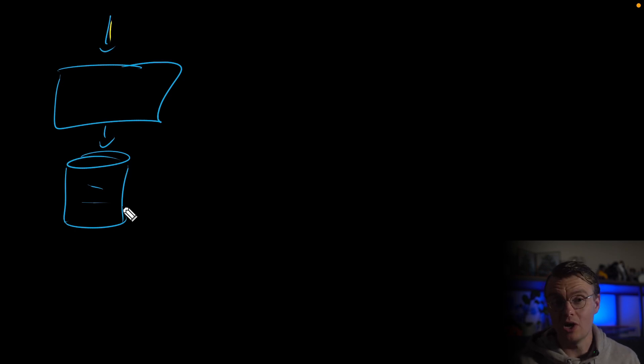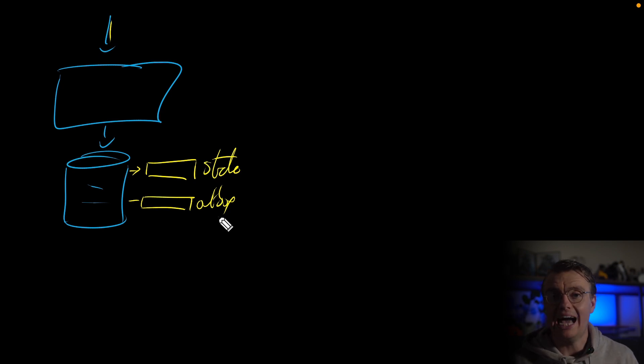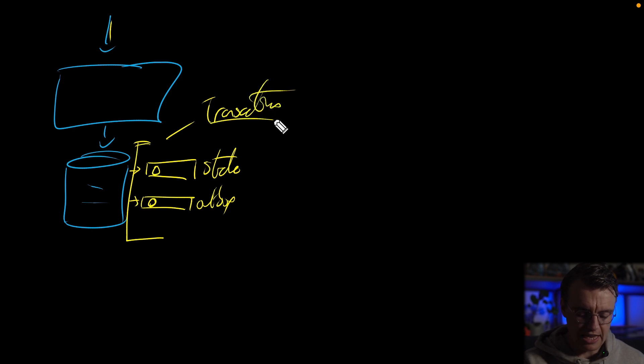In the traditional outbox pattern, when a request comes in you write state to your database — but you write to two separate tables. One is your main table (orders, payments, inventory), and the other is an outbox table where you store events you want to publish. You wrap both writes inside a transaction, so if one fails, they both fail and you return an error to the user.